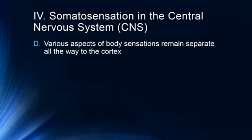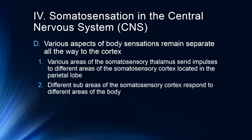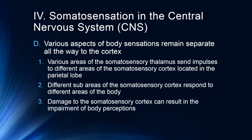Various aspects of body sensations remain separate all the way to the cortex. Different areas of the somatosensory thalamus send impulses to different areas of the somatosensory cortex, located in the parietal lobe, with different sub-areas responding to different parts of the body — forming what we call the homunculus. Damage to the somatosensory cortex can result in impairment of body perceptions, and can cause what we call alien limb syndrome, where a person believes one of their limbs has been replaced or belongs to somebody else.